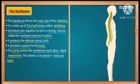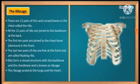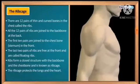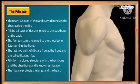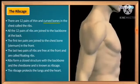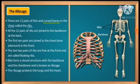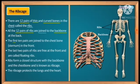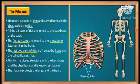Third: rib cage. There are 12 pairs of thin and curved bones in the chest called ribs. All 12 pairs of ribs are joined to the backbone at the back — 12 pairs means 24 total. At the front, the first 10 pairs are joined to the chest bone. The last two pairs of ribs are free and can float — they are called floating ribs.